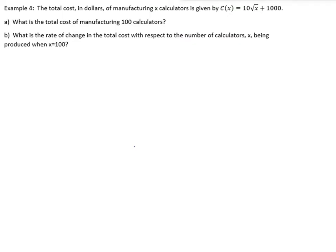Last question. The total cost in dollars of manufacturing x calculators is given by this function right here. What is the total cost of manufacturing 100 calculators? So sometimes you're going to get easy questions like this, where you just simply have to plug in the number. So what is root 100? It's just 10. 10 times 10 is 100, plus 1,000. The cost to manufacture 100 calculators is $1,100.